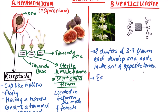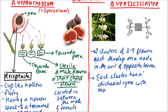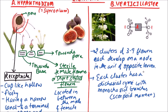Each cluster of 3 to 9 flowers has a dichasial cyme with monochasial branches. This is the main axis. Two branches come out from the node, each ending in a flower — this is the first flower and this is the second one. This forms the dichasial cyme, and then branching continues in a scorpioid manner for the third and fourth flowers.